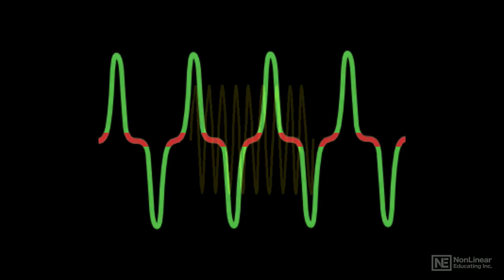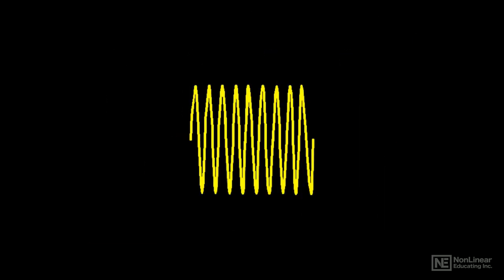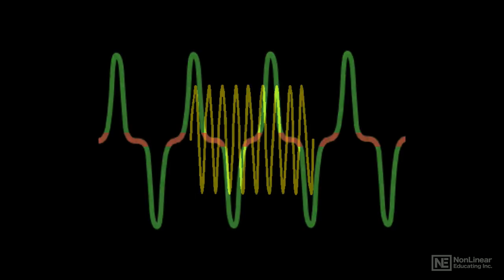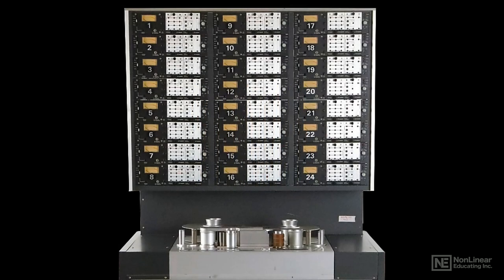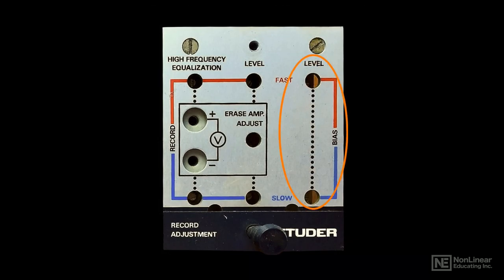The actual level of the bias signal applied is a trade-off. The optimum level for minimal distortion may cause the high-frequency response to fall off, so the bias level is set for the best balance between those two considerations, based on the tape speed and formulation in use. We'll see how to make this over-biased setting when I cover the tape alignment procedure a little later in the course.